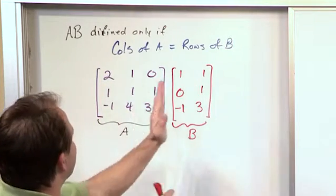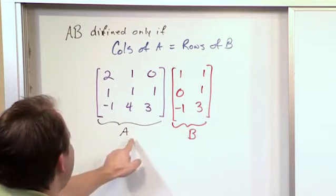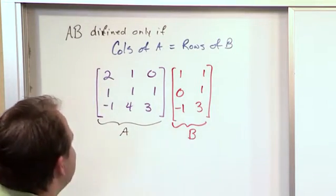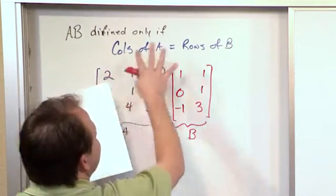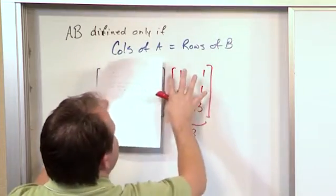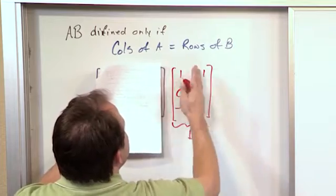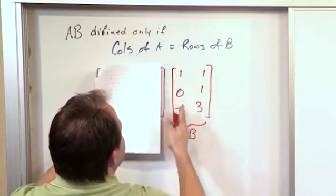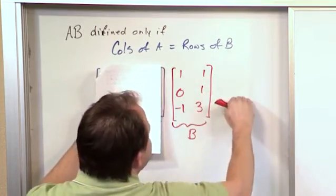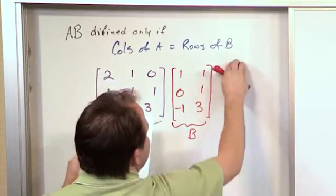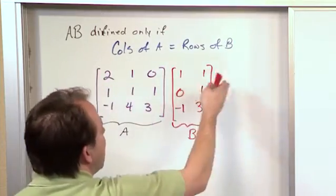In fact, if we switch these things around and try to take B times A, it doesn't actually work out. If you actually pretend for a second that this one was over here, and then we were multiplying this guy times the purple matrix if we moved it to the other side, the columns of the first matrix is 2, the rows of the second matrix, if we move this over here, the rows would be 3.